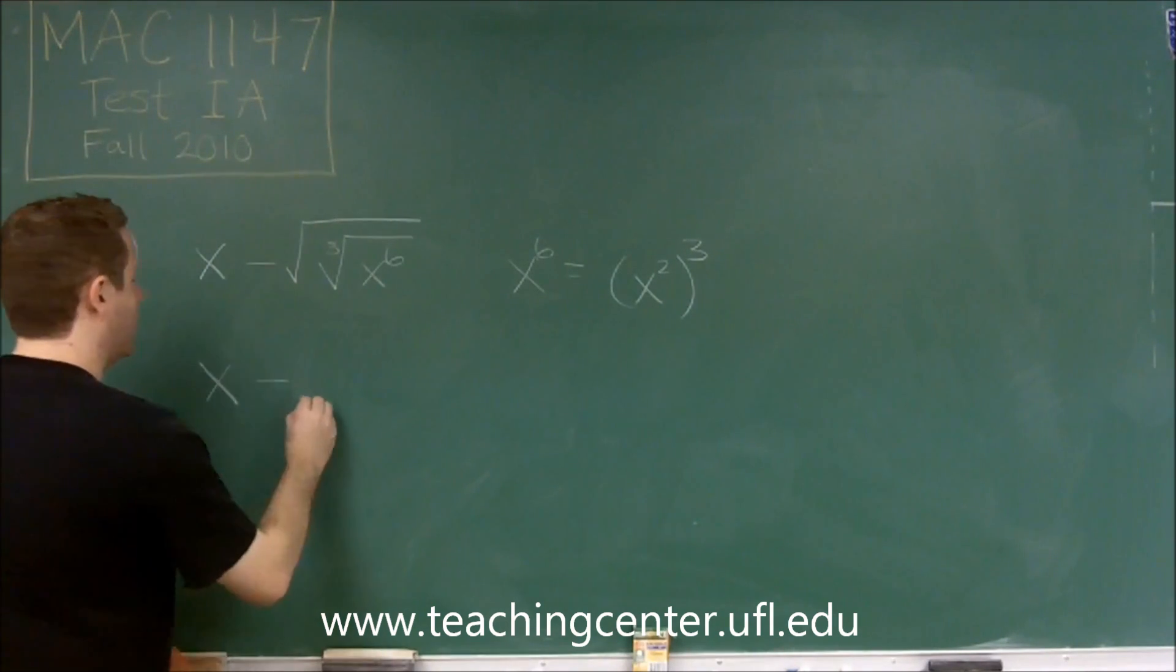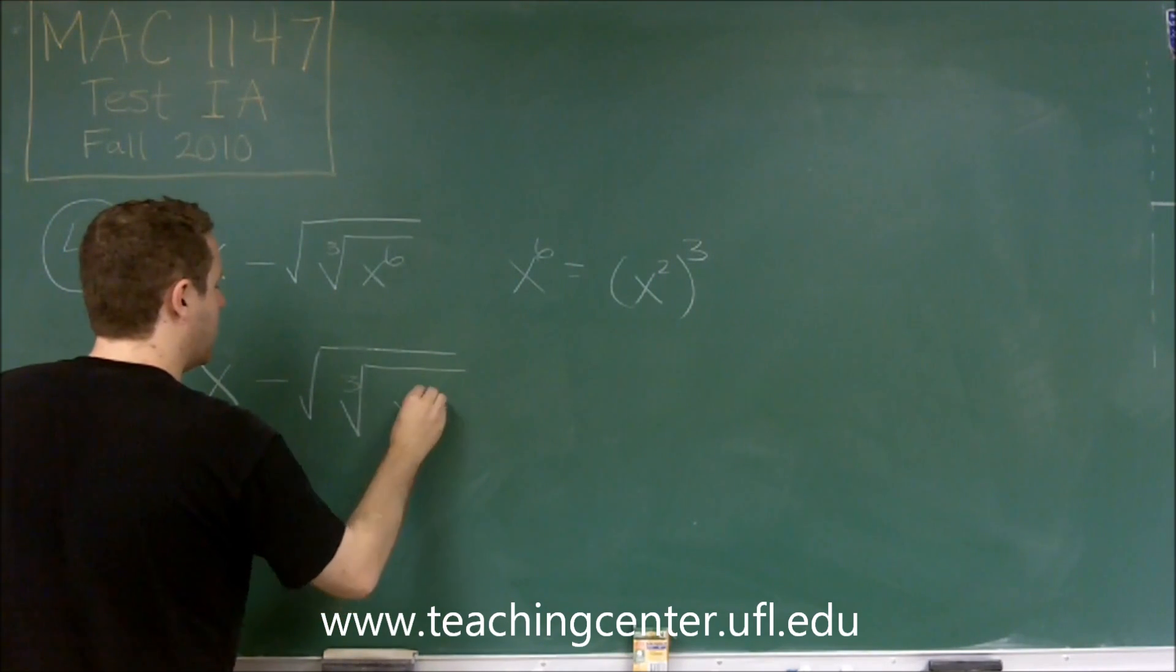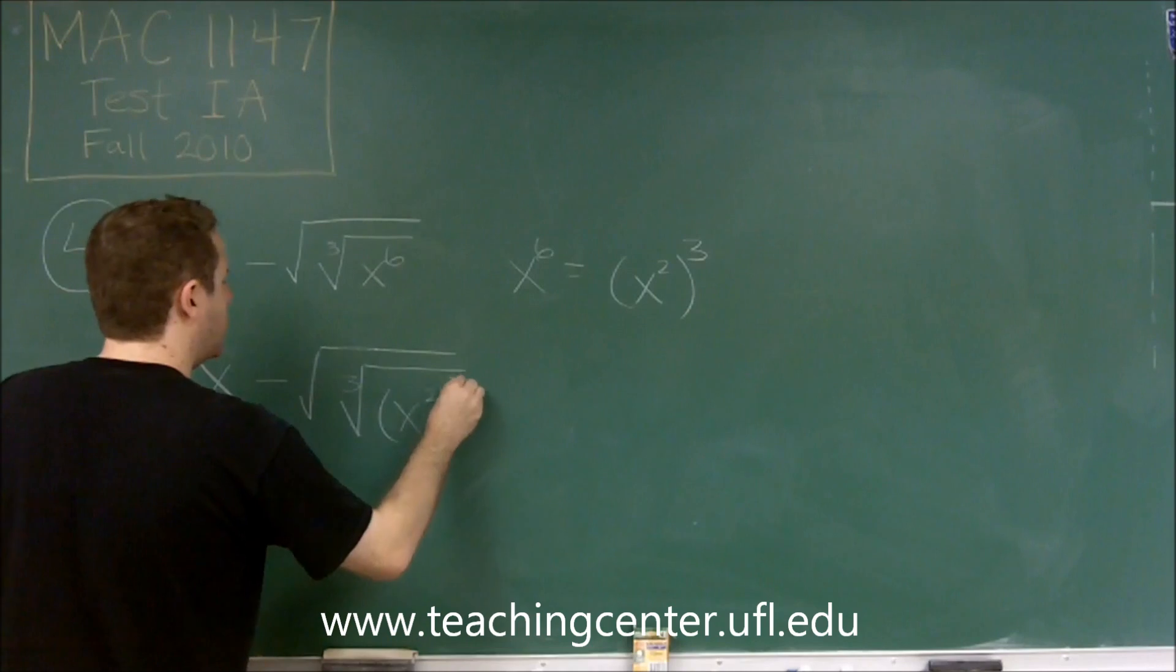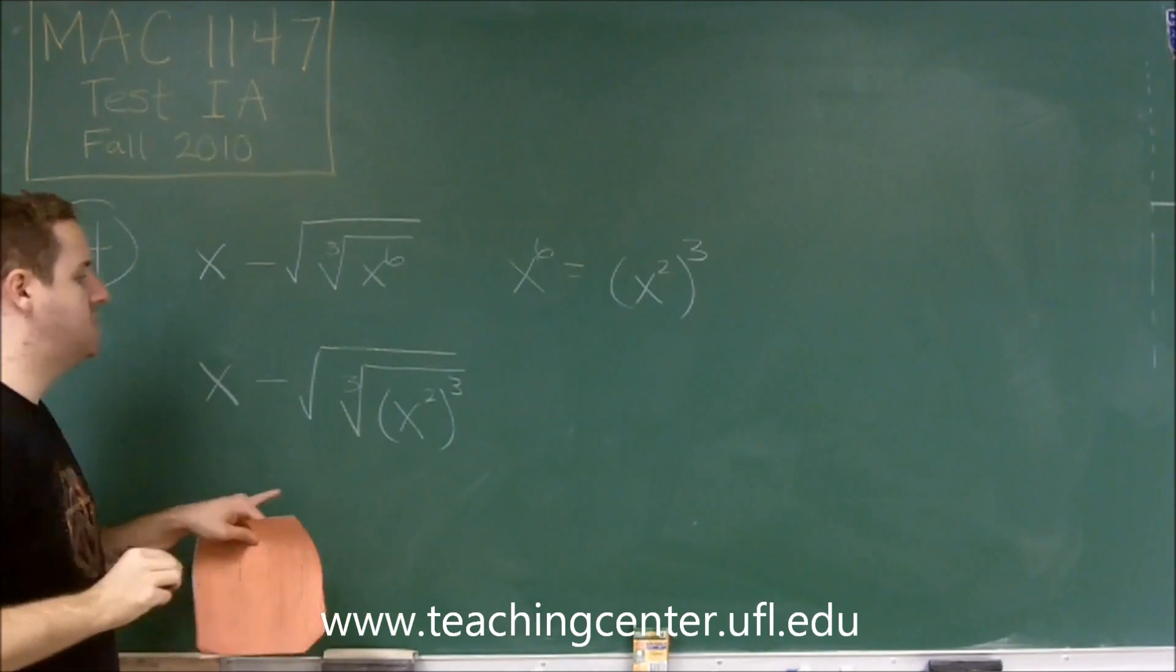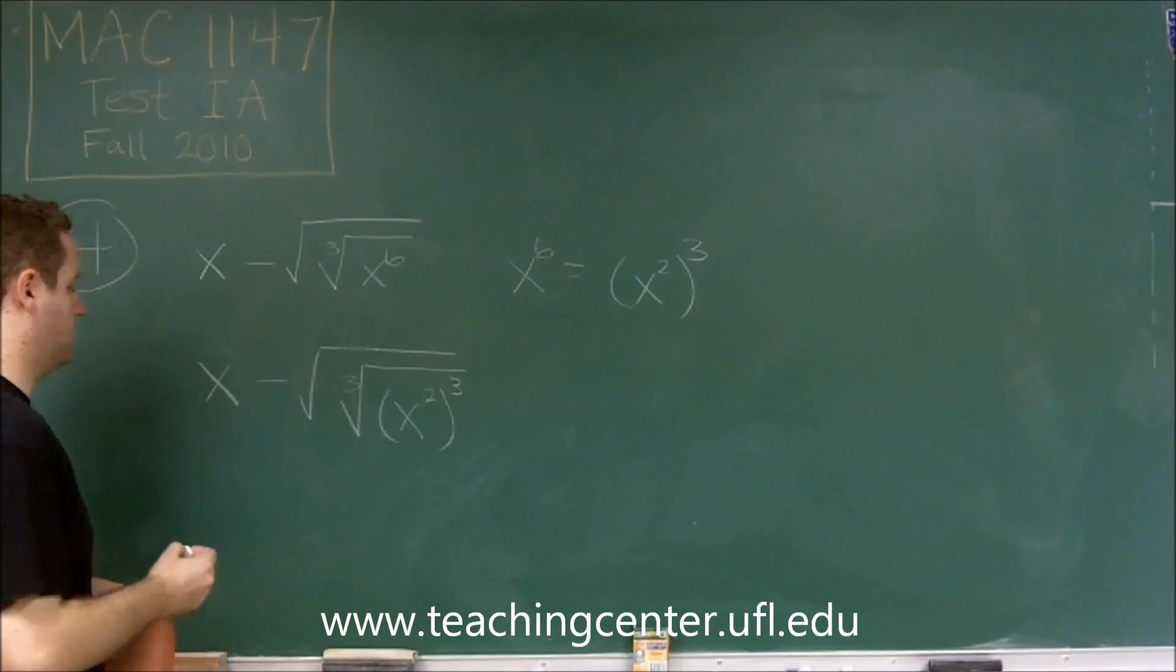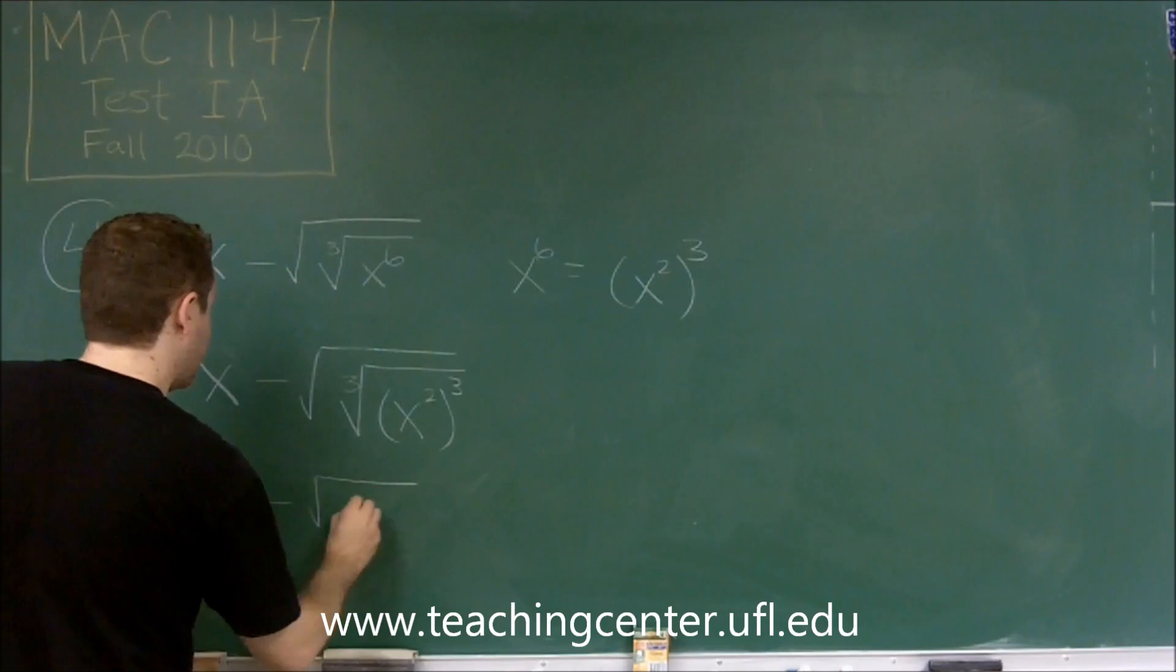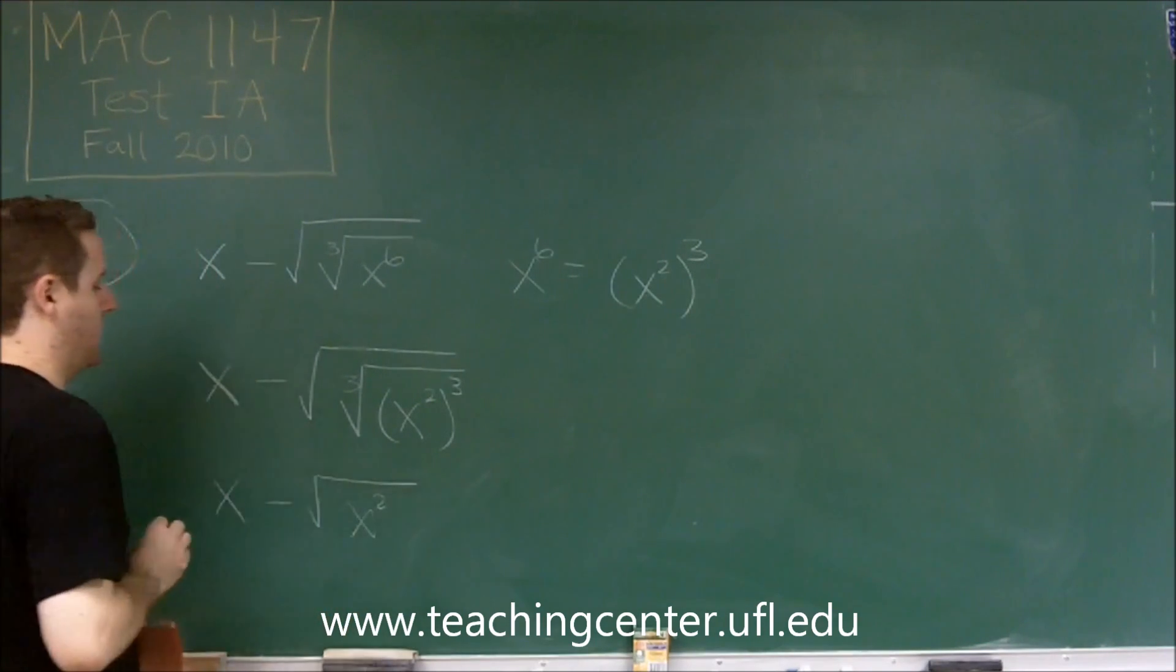So we can write this as x squared cubed. And when you have something that's cubed inside a cube root, that just destroys the cube root essentially and gets rid of that power also. So now we're at x minus just the square root of x squared.